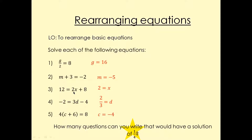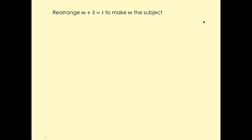Move them one by one — move eight to the other side first, and then move two to the other side. Same case here. If you want to find the value of D, move minus four to the other side and then move three to the other side. And here you have to expand the bracket first and rearrange to find C. Always read the question properly — that's the key thing.